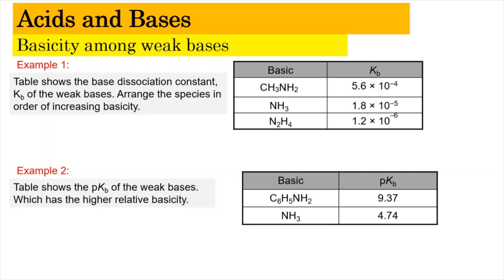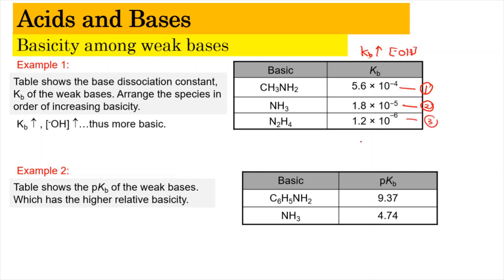Now we're going to look into the example. The table shows the base dissociation constant Kb for the weak bases, and we need to arrange the bases in the order of increasing basicity. Similar to the acid, when the Kb value is higher, it means it's going to have a higher concentration of hydroxide ion. The value at 10^(-4) has the highest Kb, followed by ammonia, and then N2H4. So ethylamine has the highest basicity, followed by ammonia, and then N2H4 — so ethylamine is the most basic.